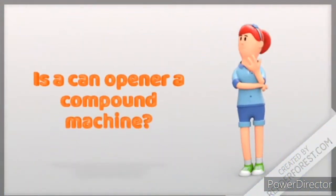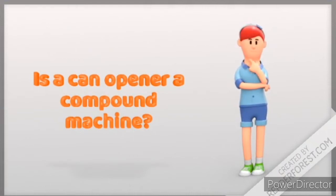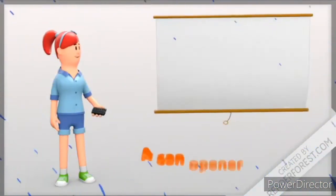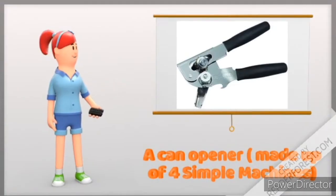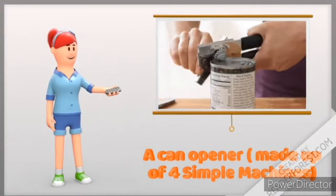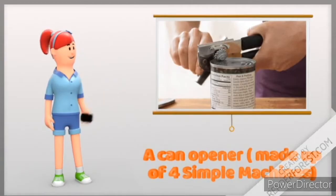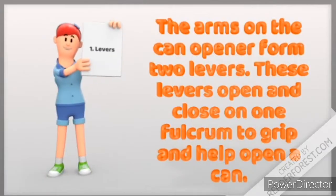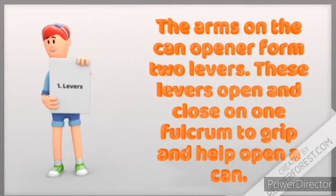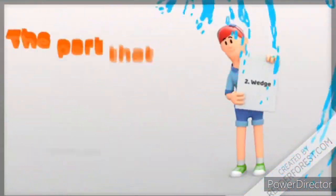But is a can opener considered a compound machine? Why? A can opener is made up of four simple machines. Number one, the arms in a can opener form two levers. These levers open and close on one fulcrum to grip and help open a can.